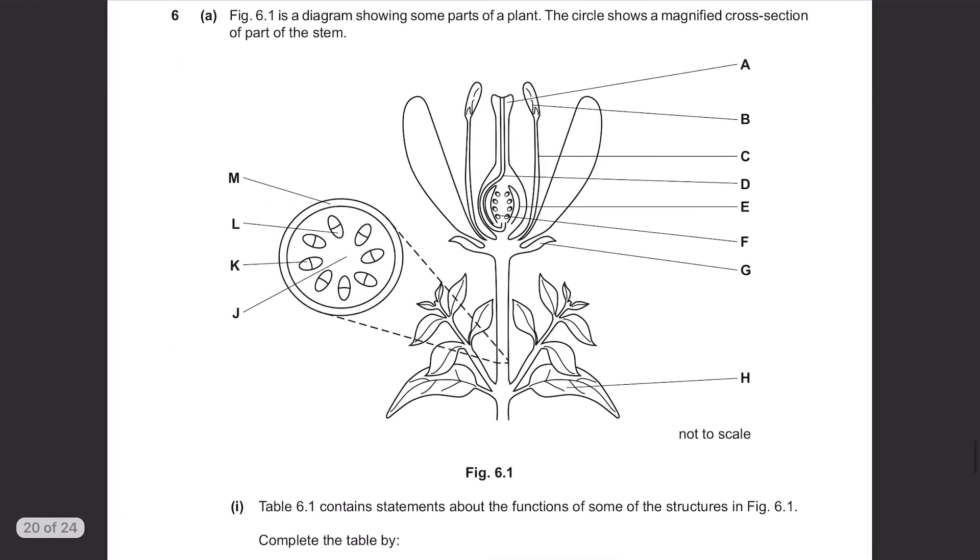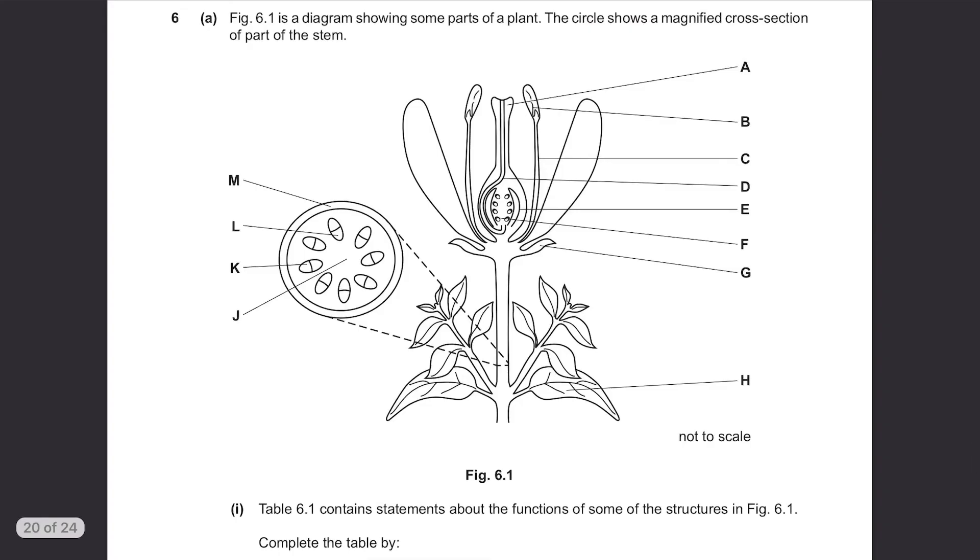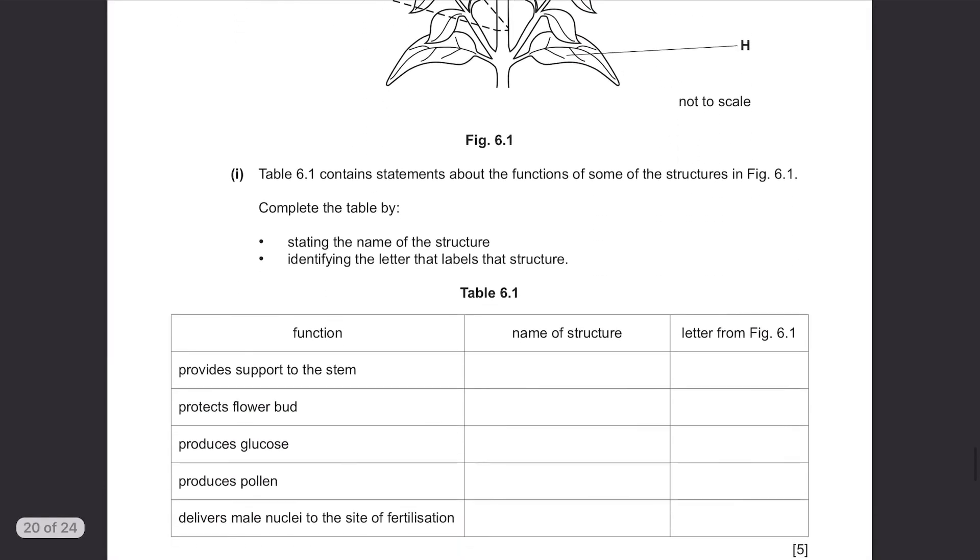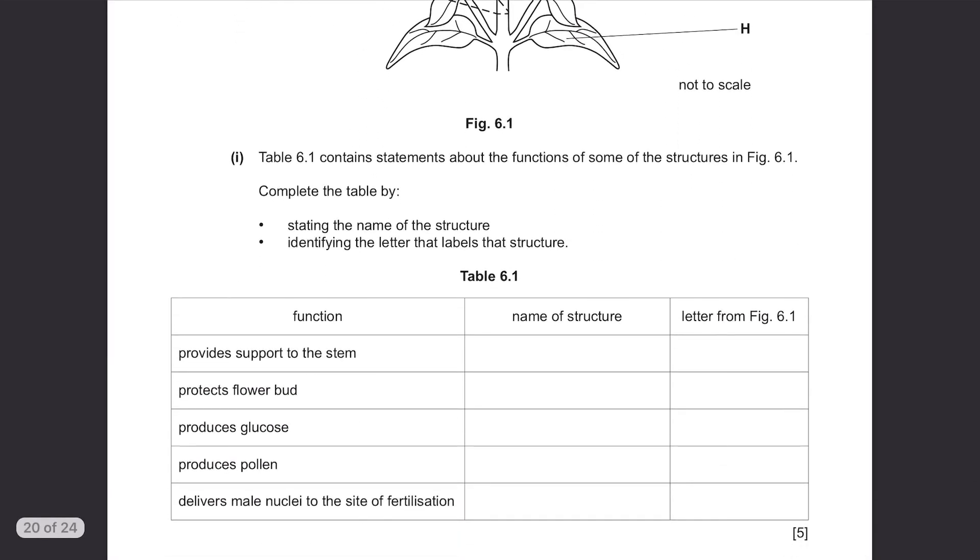Part A. Figure 6.1 is a diagram showing some parts of a plant. The circle shows a magnified cross-section of part of the stem. Lots of parts are labelled from A to M. Table 6.1 contains statements about the functions of some of the structures in Figure 6.1. Complete the table by stating the name of the structure, identifying the letter that labels that structure.